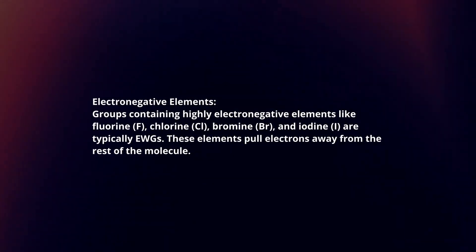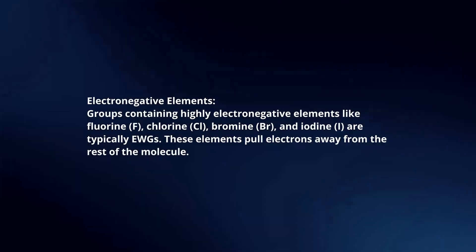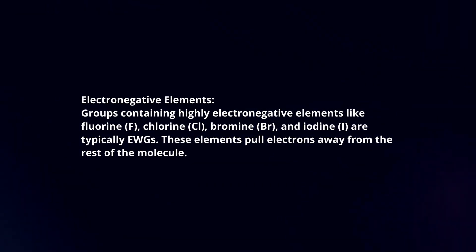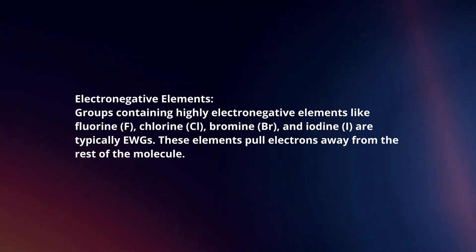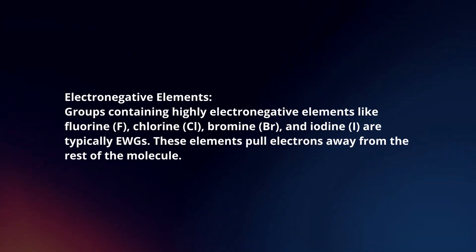Electronegative elements: Groups containing highly electronegative elements like fluorine, chlorine, bromine, and iodine are typically EWGs. These elements pull electrons away from the rest of the molecule.